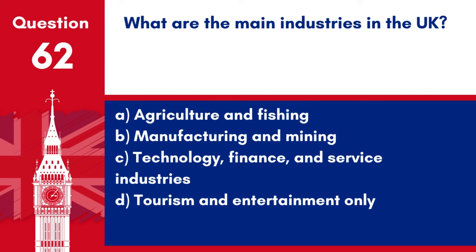Question 62. What are the main industries in the UK? A. Agriculture and Fishing. B. Manufacturing and Mining. C. Technology, Finance and Service Industries. D. Tourism and Entertainment Only. Answer: C. Technology, Finance and Service Industries. The main industries in the UK include technology, finance and various service industries.